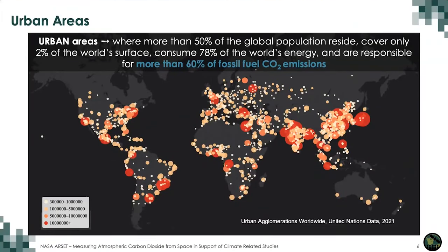So why are we interested in knowing emissions from urban areas? This map shows all the different pockets classified as megacities or urban areas based on their population characteristics. More than 50 percent of the global population reside in one of these pockets, yet this only covers two percent of the world's surface. However, these pockets are responsible for more than 60 percent of fossil fuel CO2 emissions — a huge amount contributed just from urban areas alone.